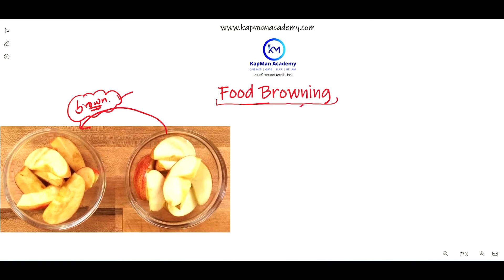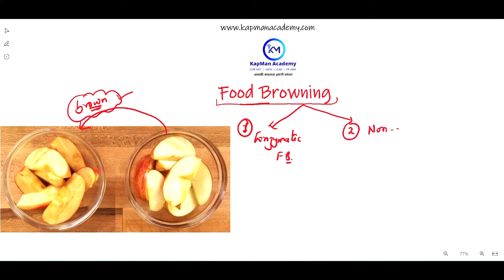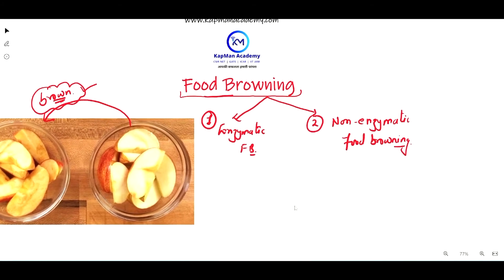Food browning is categorized into two types. The first category is called enzymatic food browning and the second category is called non-enzymatic food browning. Now let's discuss each category one by one.